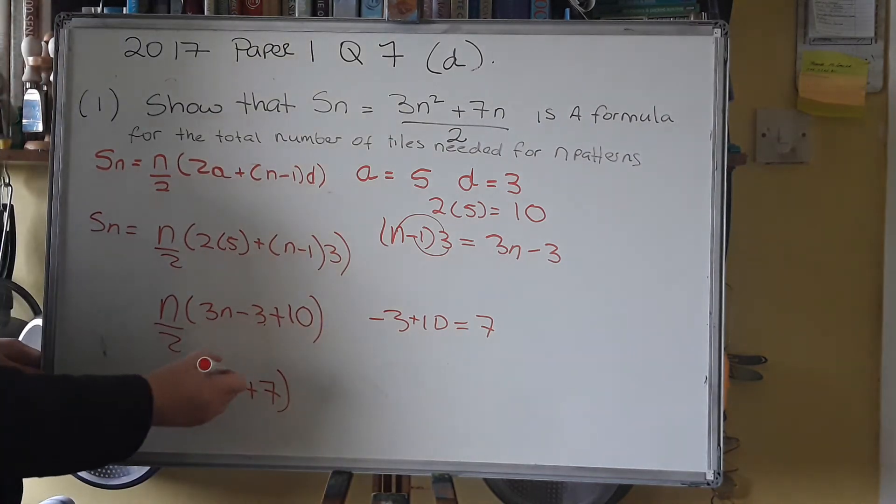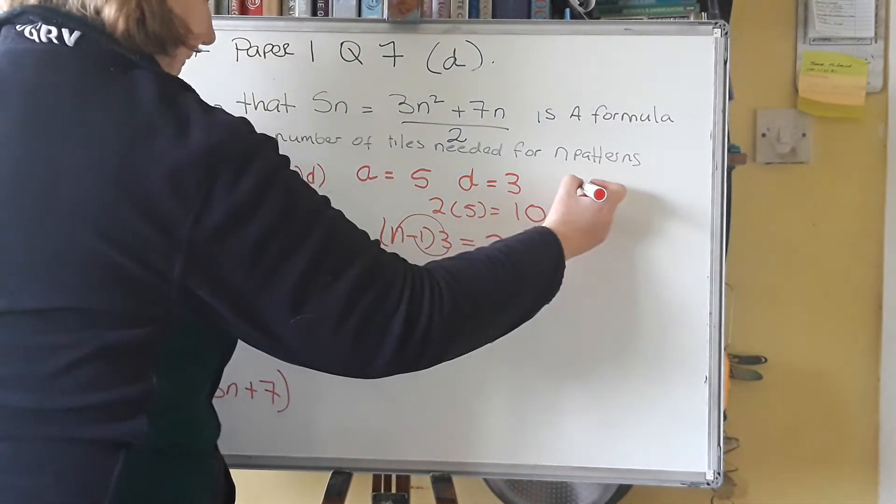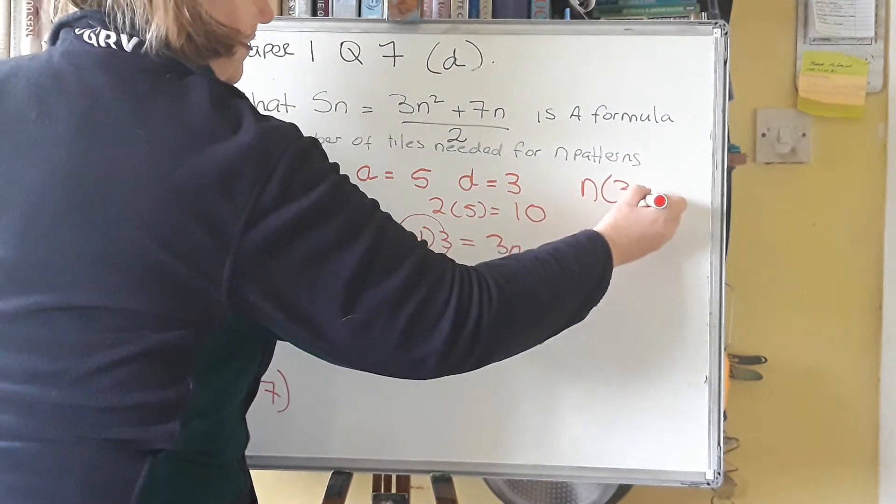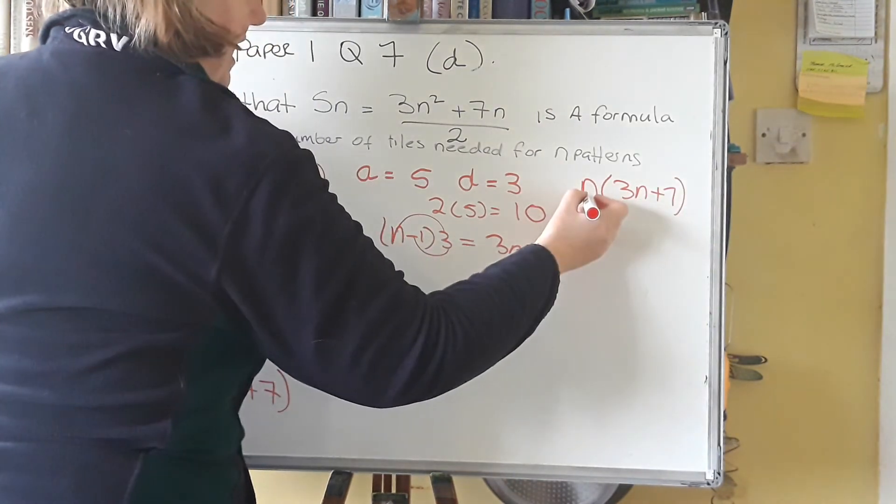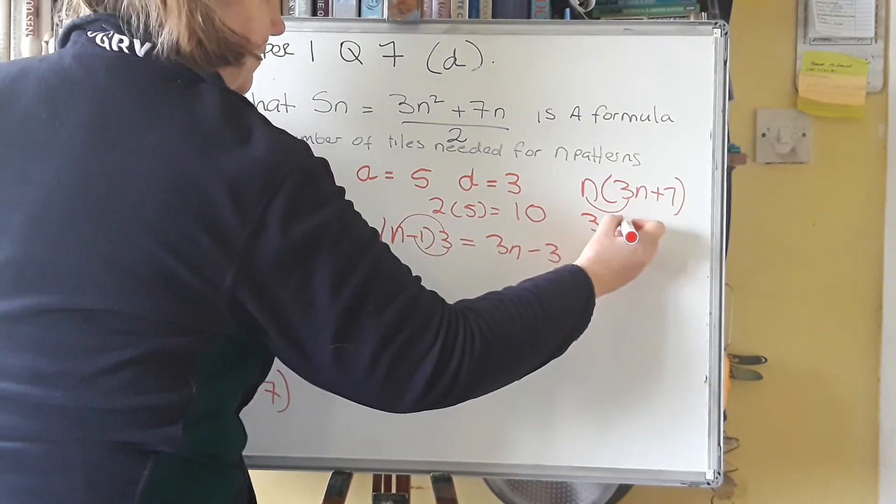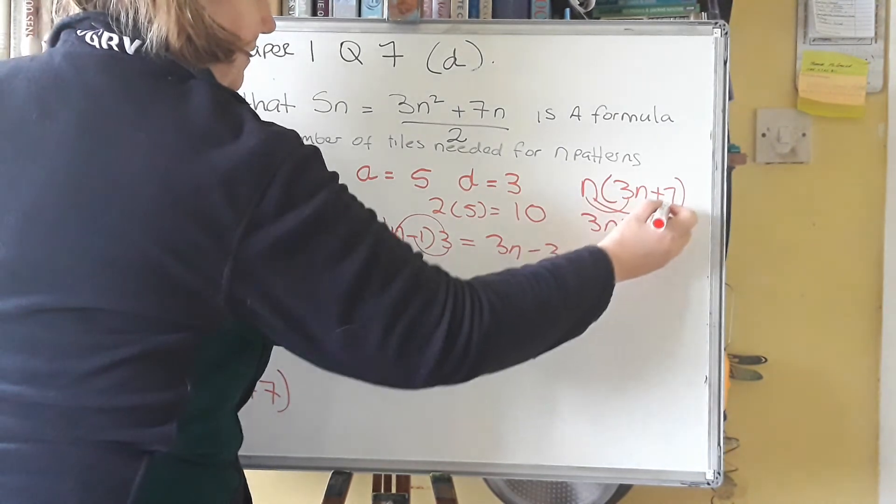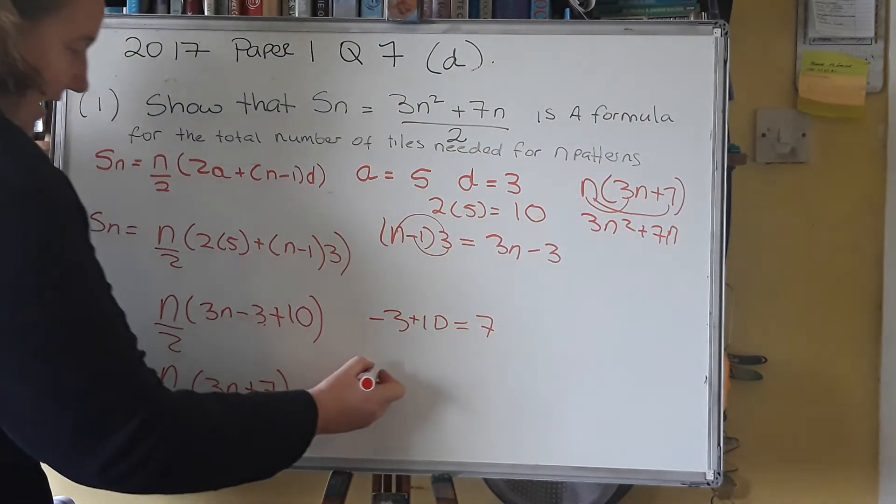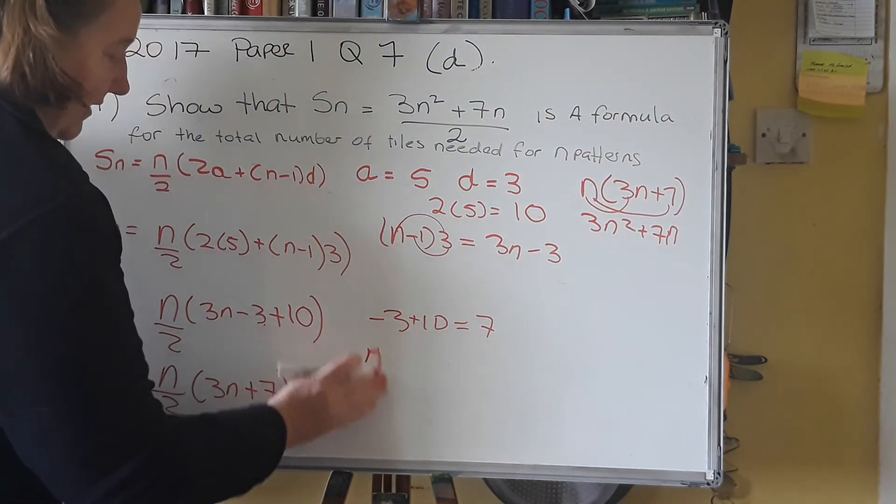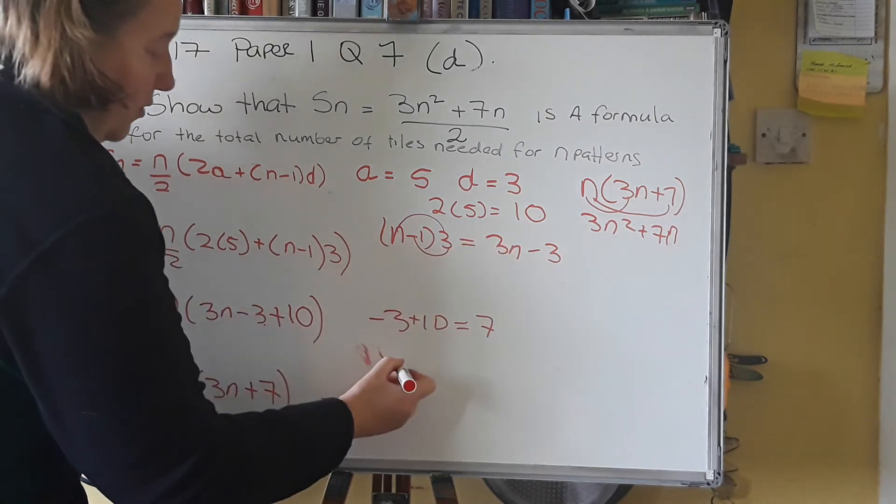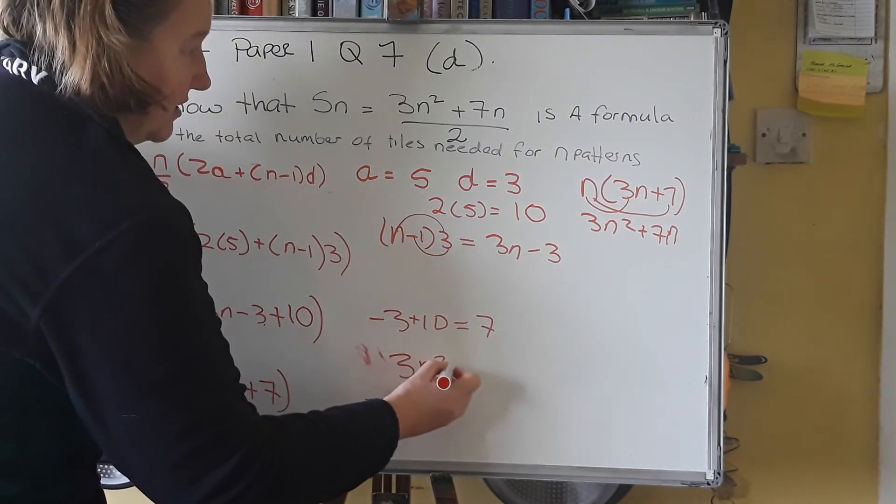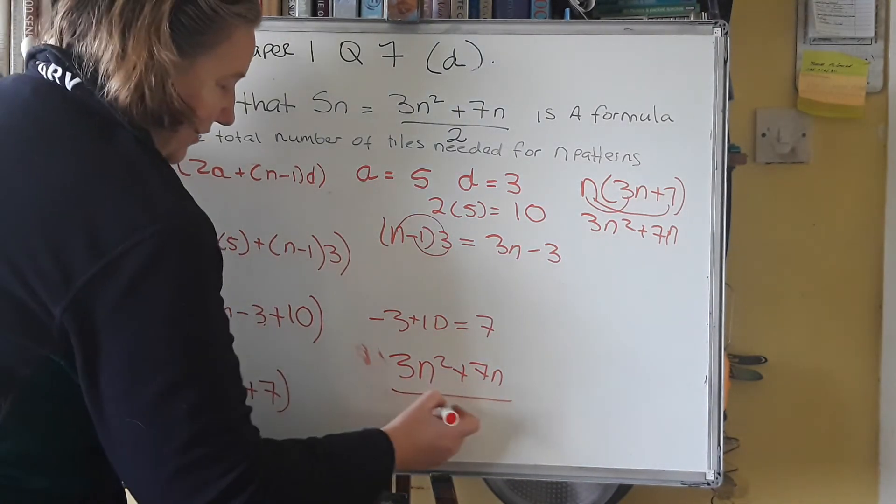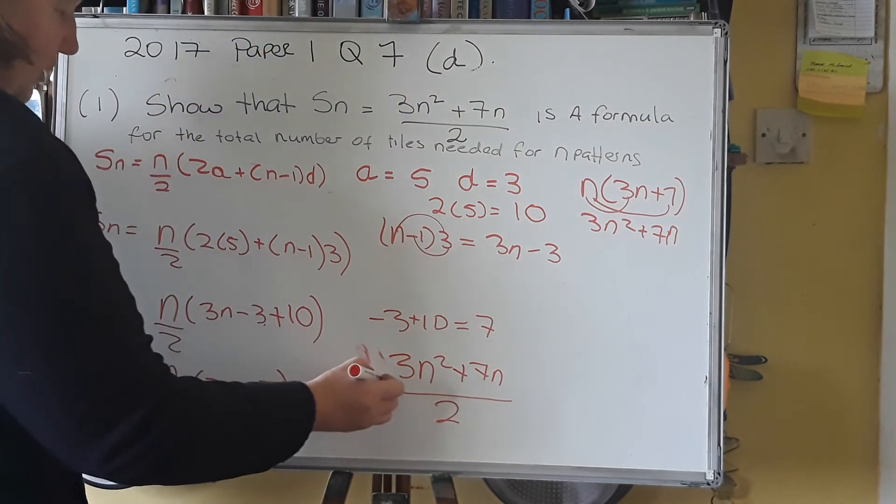Now at this point what I'm going to do is I'm going to do n, this top line. n by 3n plus 7. n by 3n gives you 3n squared. And n by 7 gives you plus 7n. So now what we have is we have 3n squared plus 7n, and that is all over the 2. And now we have shown...